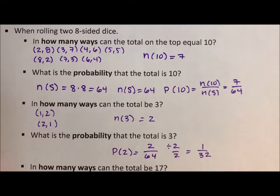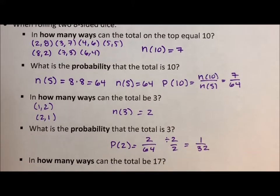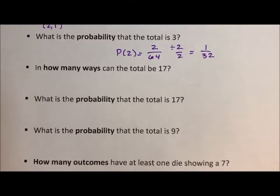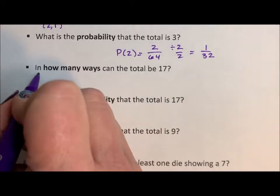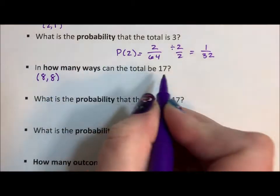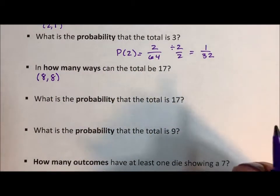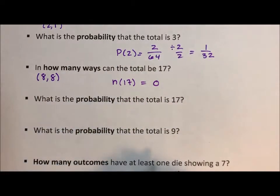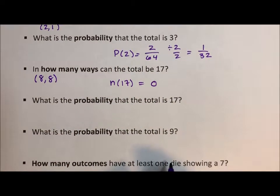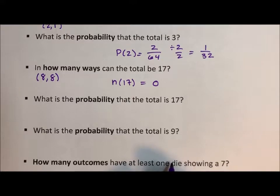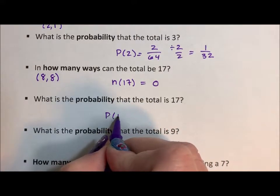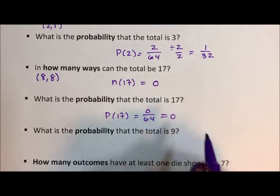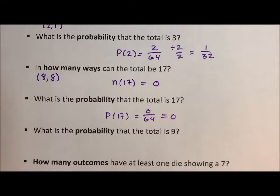In how many ways can the total be 17? Well, 8 and 8 equals 16, so 17 is impossible. The number of ways to get 17 is zero, which means the probability of 17 is 0 over 64, or just 0. Zero is a valid probability.